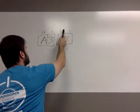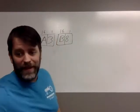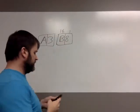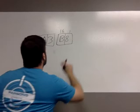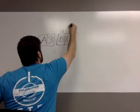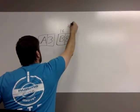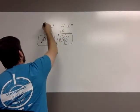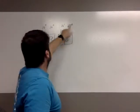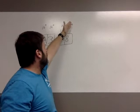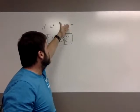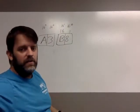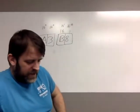If this is the ones place and this is the 16s place, what's the next place going to be? The way this really works is: this place is 16 to the power of 0, this place is 16 to the power of 1, this place is 16 to the power of 2, and this place is 16 to the power of 3. Anything to the power of 0 is 1, so 16 to the power of 0 is 1. 16 to the power of 1 is 16.